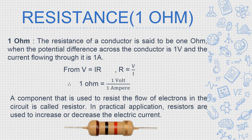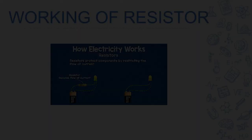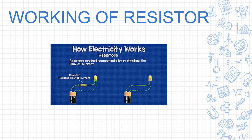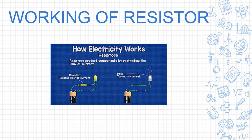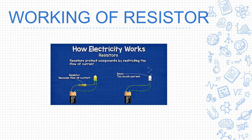In practical applications, resistors are used to increase or decrease the electric current. Sometimes we need more current, sometimes less current in our circuit — that is why resistors are used. As shown in the figure, when a resistor is attached, it reduces the flow of current.